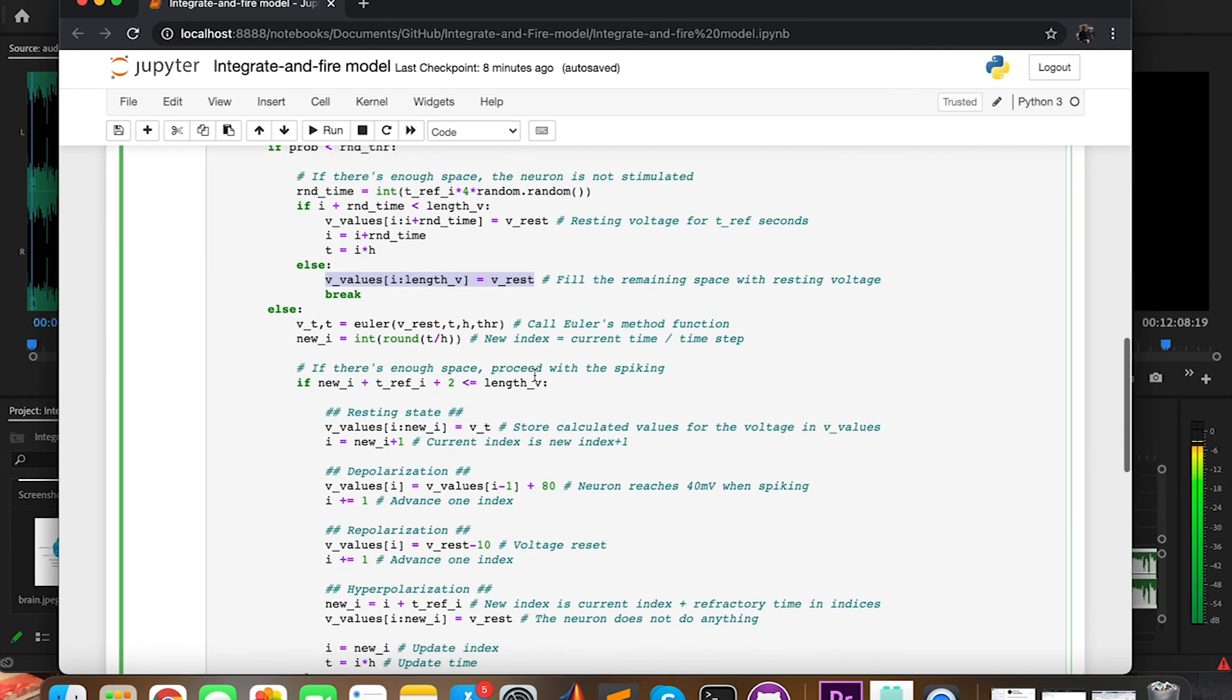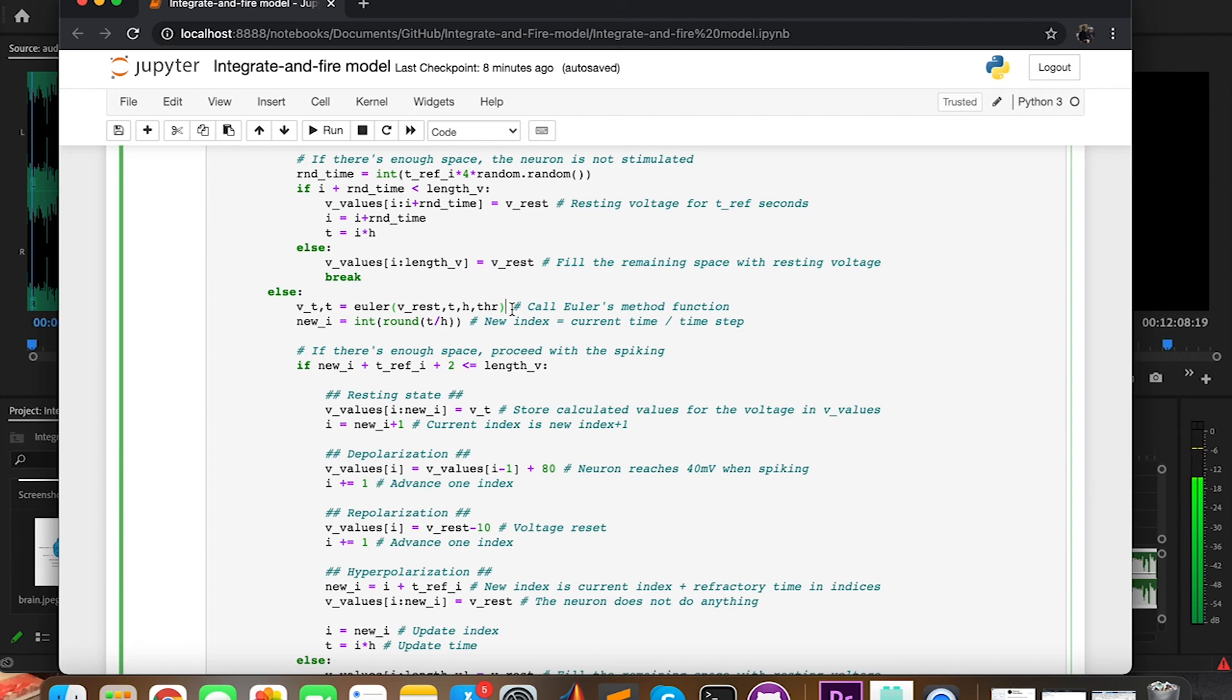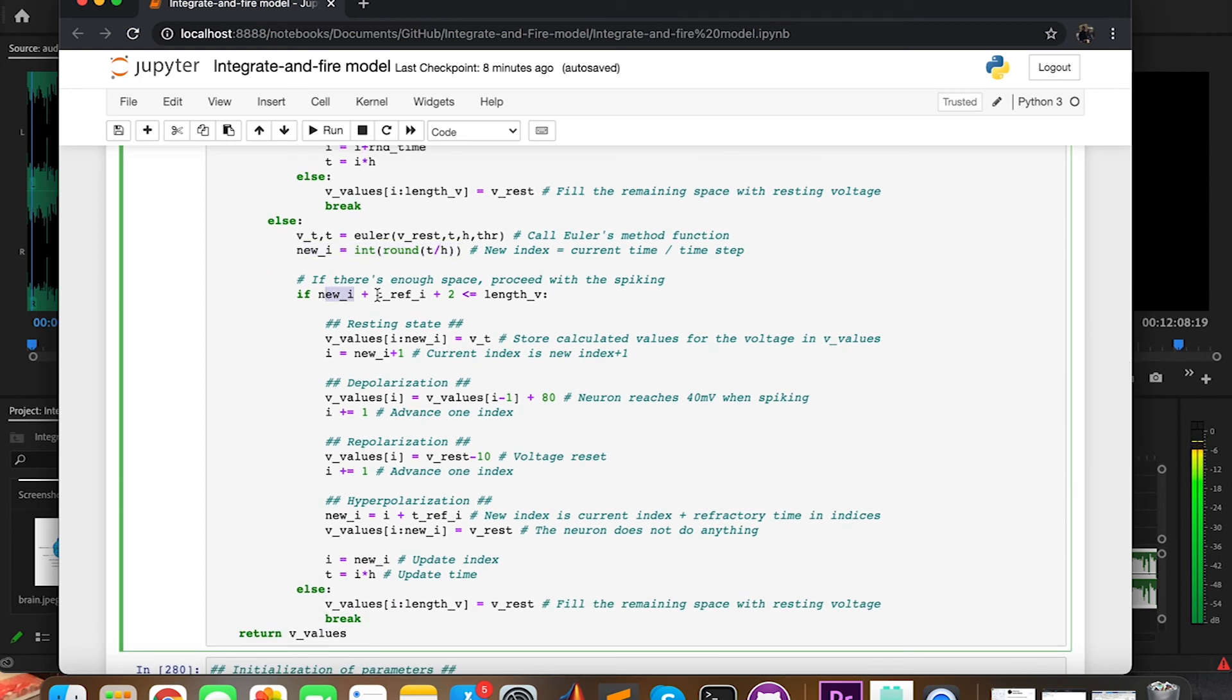Now imagine that the probability is actually greater than the random threshold. Well then, first of all we are going to compute the Euler's function, which will give us an array with the result of the differential equation and t, which is at the point where Euler's method stops. Then we convert this t into indices again, and if there is space, we compute the values of the different stages.